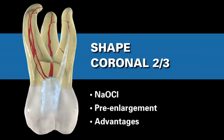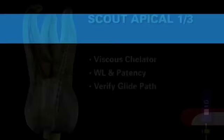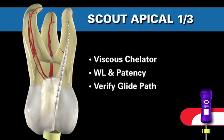Shaping is always done in a bath of full-strength sodium hypochlorite. One single shaping file can pre-enlarge, remove coronal interferences, remove triangles of dentin, and expand the shape almost optimally in the upper two-thirds. With the upper two-thirds optimally shaped, return to the viscous chelator as we place a file into a part of the canal we've never been before. When the rubber stop reaches your selected reference point, you can think about working length using conventional films, digital radiography, or apex locators.